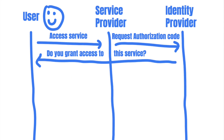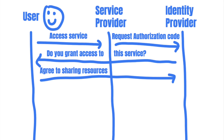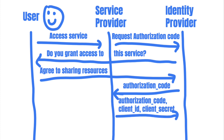The identity provider will then ask the user to grant access to the service provider, typically via a pop-up window. After the user agrees to the permissions, the identity provider will send the redirect URI specified by the service provider and an authorization code. The service provider can then exchange an access token from the identity provider using the authorization code along with their client ID and secret.